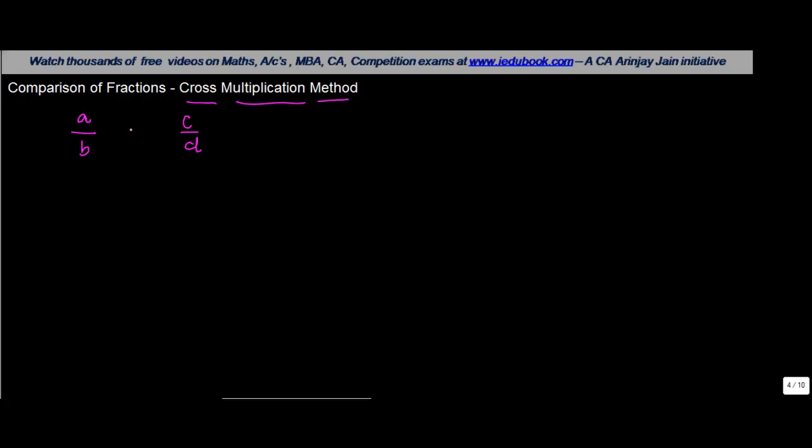In the cross multiplication method, what we do is we multiply the numerator of the first fraction with the denominator of the second and we multiply the numerator of the second with the denominator of the first.